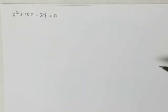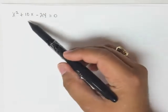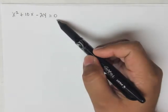We are asked to solve the following quadratic equation: x squared plus 10x minus 24 equals 0.